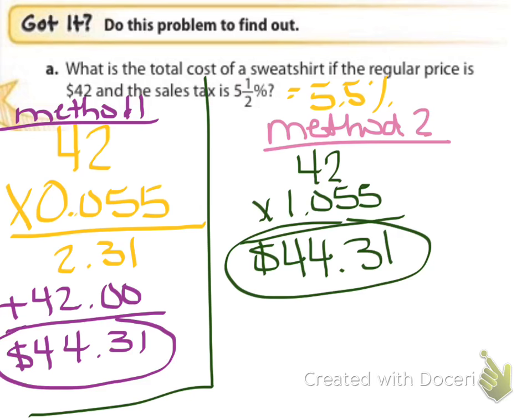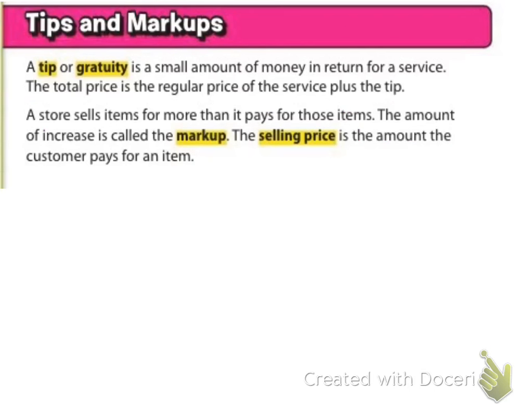That's method one. Now method two, which is my preferred method to be honest with you, I'm going to do my 42 times 1.055. So that includes the price plus the 5.5% sales tax and I still get $44.31. It's completely up to you which method you'd like to use. Obviously you see both of them come out to the same answer. You might want to practice both.